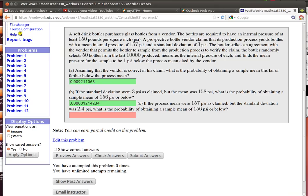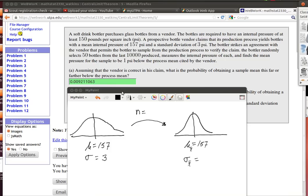So let's look at the theory here real quickly. Here's the idea. The guy who's selling the bottles claims that his bottles are normally distributed with the mean of 157 and a standard deviation of 3. So the distribution of those pressures that the bottles can handle are distributed like this.